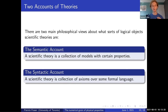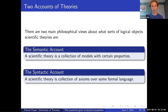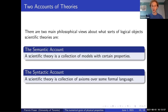The syntactic account is the dialectical rebuttal to the semantic account. On the syntactic account, a scientific theory is a collection of axioms over some formal language. Axioms have models, so there's a derived notion of models in the syntactic view, but the syntacticist drives home that axioms are the constitutive feature of a scientific theory—encoding things like laws of nature and the structure of physical entities—while models are merely incidental instances of those general rules.